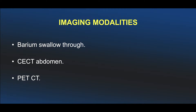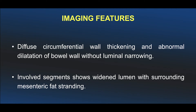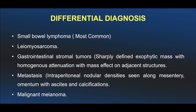We can appreciate this finding on barium swallow, CT abdomen, and PET-CT. Imaging features include diffuse circumferential wall thickening and abnormal dilatation of the bowel without luminal narrowing. Obstruction is very rare in cases of unusually dilated bowel. Involved segments show a widened lumen with surrounding mesenteric fat stranding.